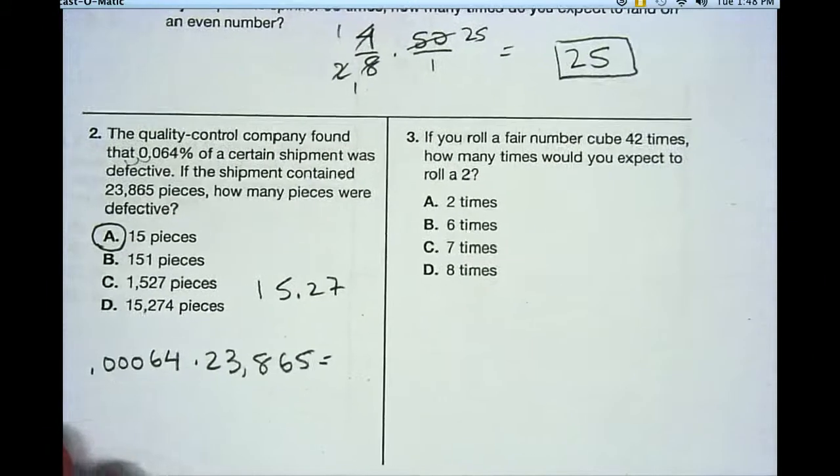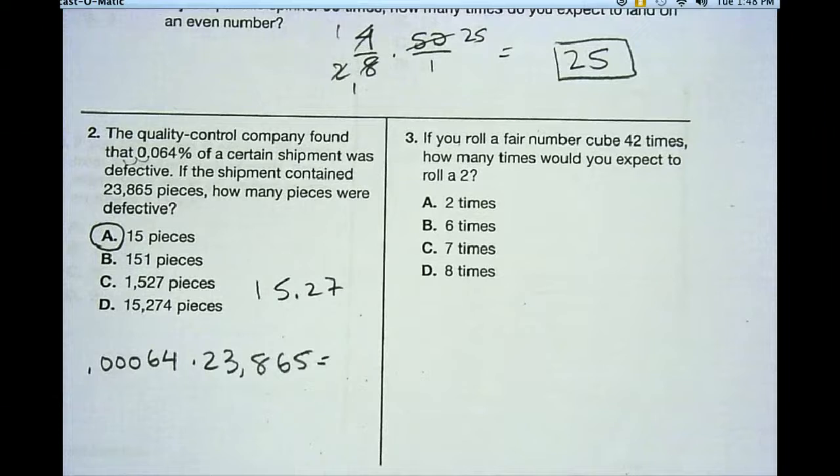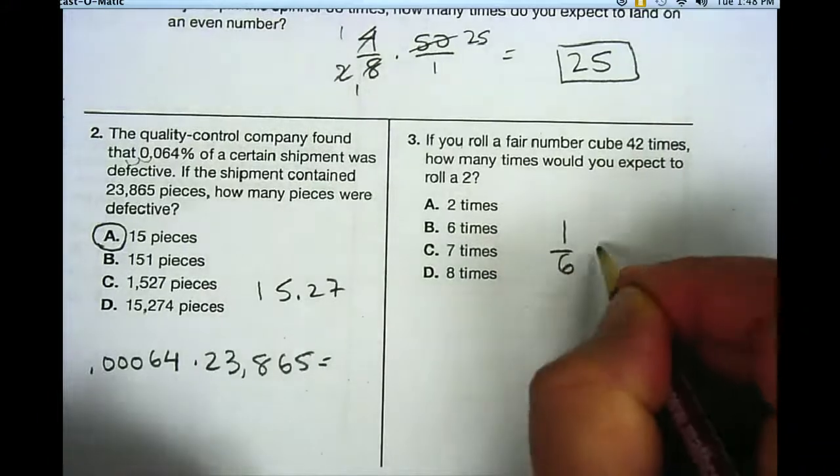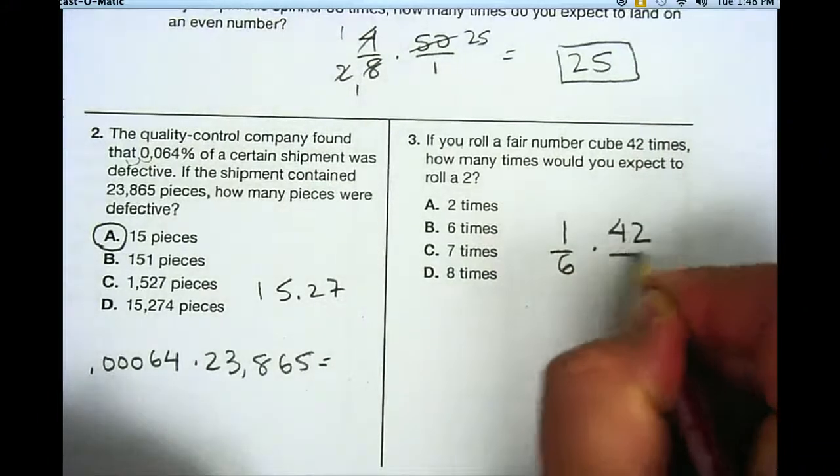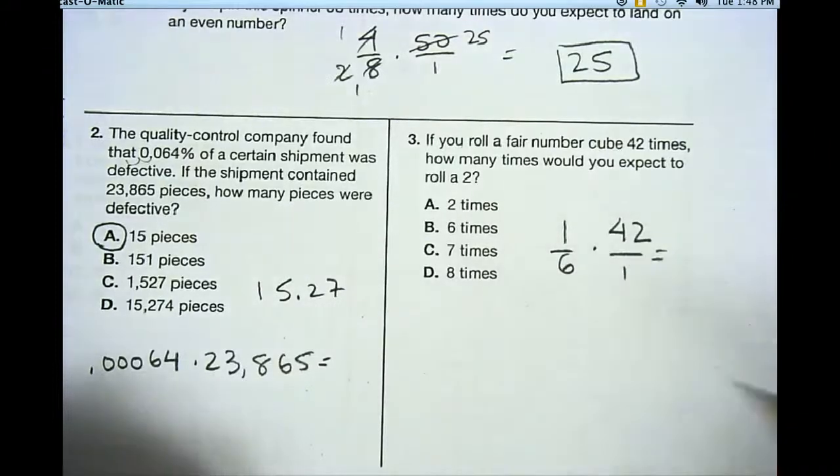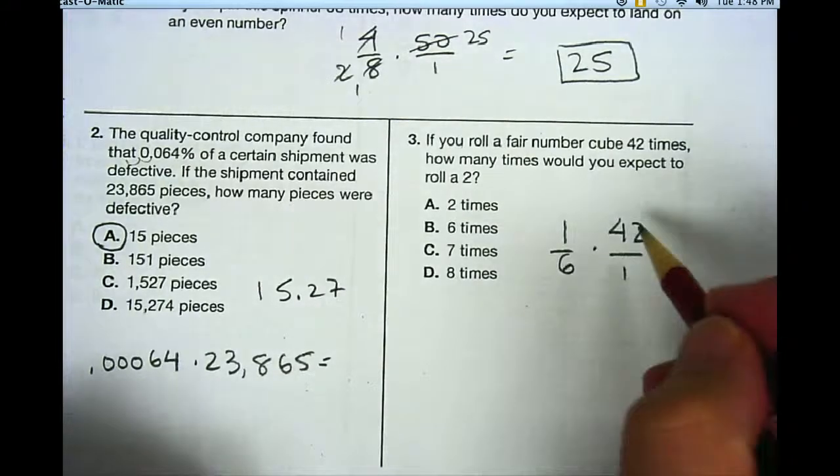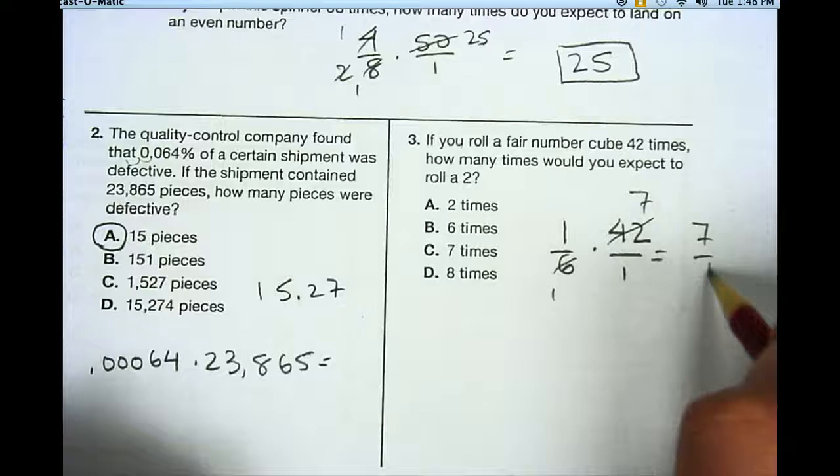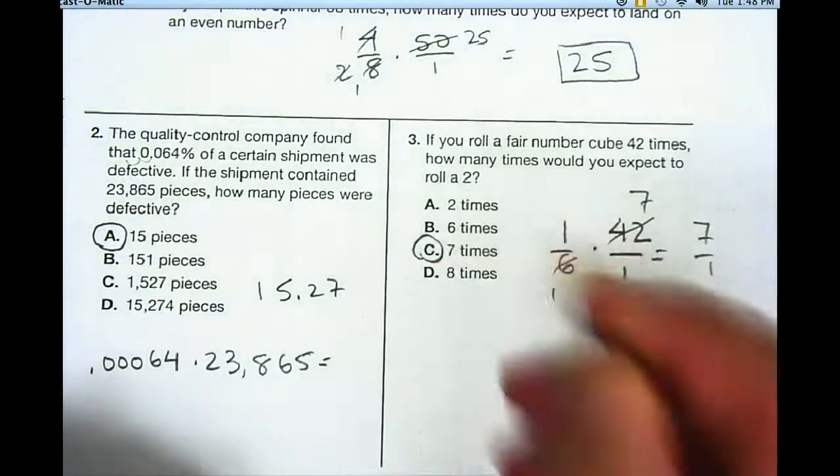Okay, let's go on to number three. If you roll a fair number cube 42 times, how many times do you expect to roll a 2? Well, there's one-sixth chance of getting a 2, and if I multiply that by 42, now I can just multiply the fractions, and I can reduce this before I multiply. 42 and 6, they both are divided by 6, and I end up getting 7 over 1. So 7 is the answer for that problem.